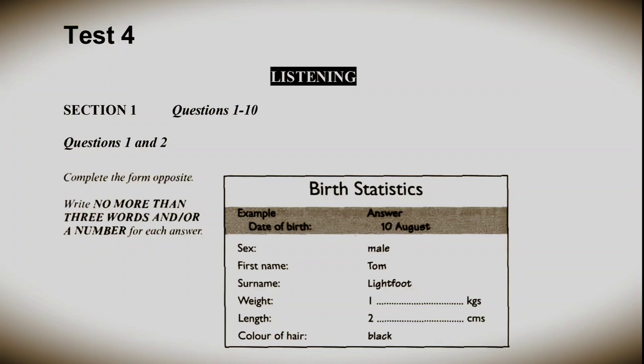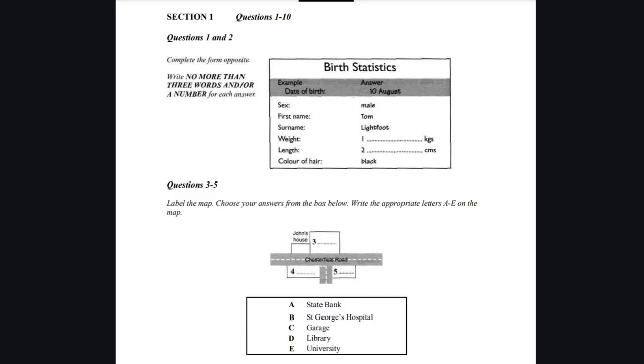Test 4. You will hear a number of different recordings and you will have to answer questions on what you hear. There will be time for you to read the instructions and questions, and you will have a chance to check your work. All the recordings will be played once only. The test is in four sections. Write all your answers in the listening question booklet. At the end of the test, you will be given ten minutes to transfer your answers to an answer sheet. Now turn to Section 1.